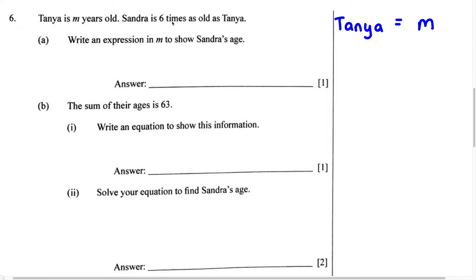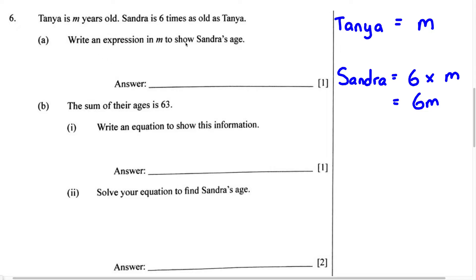Now for Sandra, it says Sandra is six times as old as Tanya. We can write Sandra, and we know Sandra is going to be six times as old as Tanya. So it says times, so we're going to multiply. And we know Tanya is going to be M years old. Therefore, we're just going to say six times M. Now we know we can write six times M as 6M. For part A, the answer is going to be 6M because Sandra is six times as old as Tanya. Therefore, we write 6M.